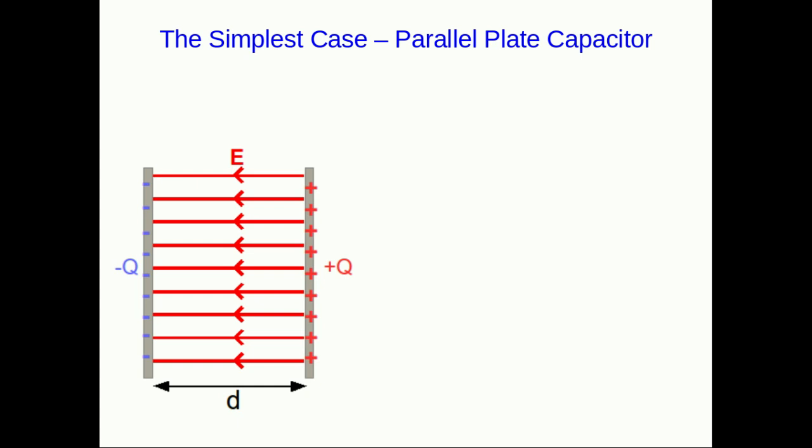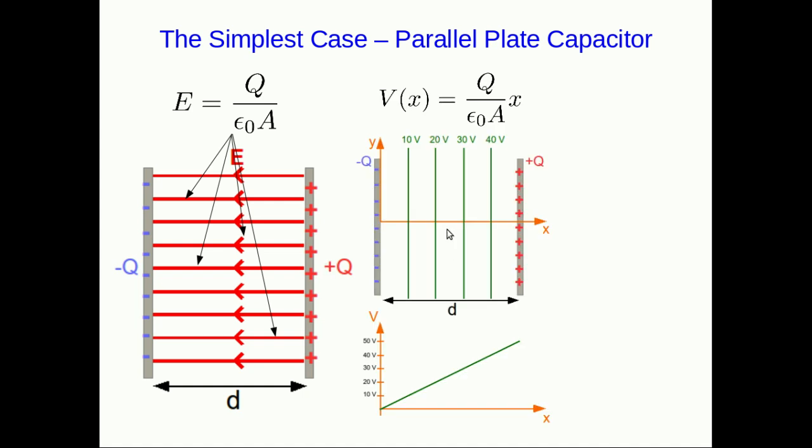To be able to write down an equation that relates the electric field strength to the potential, we're going to go back yet again to the simplest case, which is the parallel plate capacitor. As we've seen over and over again, the electric field strength inside a parallel plate capacitor is the same everywhere, and it's given by this expression. We've also seen that the potential as a function of position inside a capacitor looks like this—it's a straight line graph, so it has constant slope.